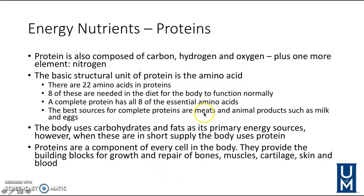Since vegetarians and vegans eliminate meat and animal products, they may not get complete proteins. The body uses carbs and fats as primary energy sources; however, when those are in short supply, the body starts using proteins. Proteins are a component of every cell — they are the building blocks for our bones, muscles, skin, and blood.